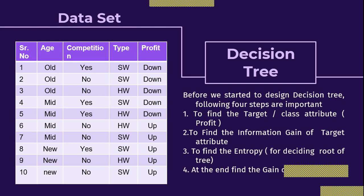Once you fix the root of your tree, the next step is to continue with the different branches. At the end, find the gain of each attribute. There is a little difference between information gain and gain: information gain is found for the target attribute, while gain is found for each of the remaining attributes.